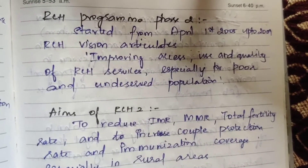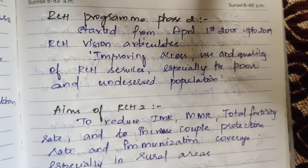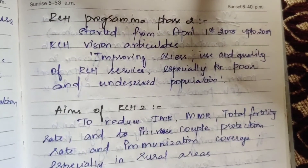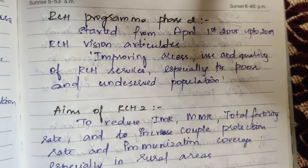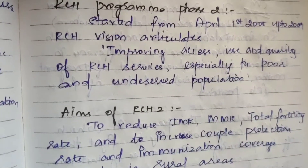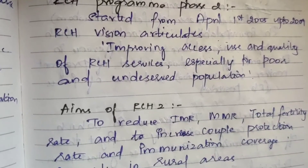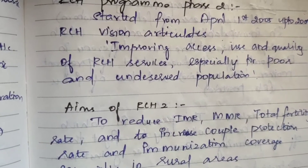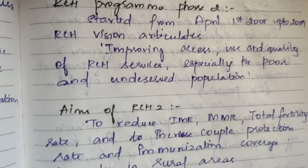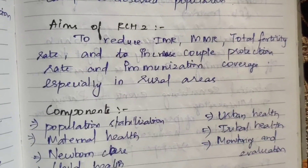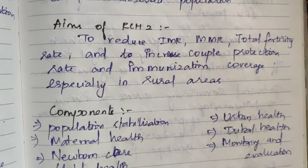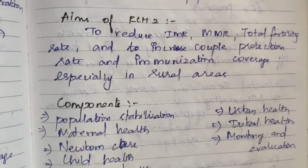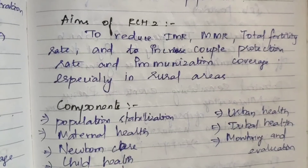RCH Phase 2 started from April 1st, 2005 up to 2009. The vision of Phase 2 is to improve access, use, and quality of RCH services, especially for poor and underserved people, ensuring best quality services reach everyone. The aims are the same as Phase 1: to reduce IMR, MMR, and total fertility rate, and to increase couple protection rate and immunization coverage, especially in rural areas.